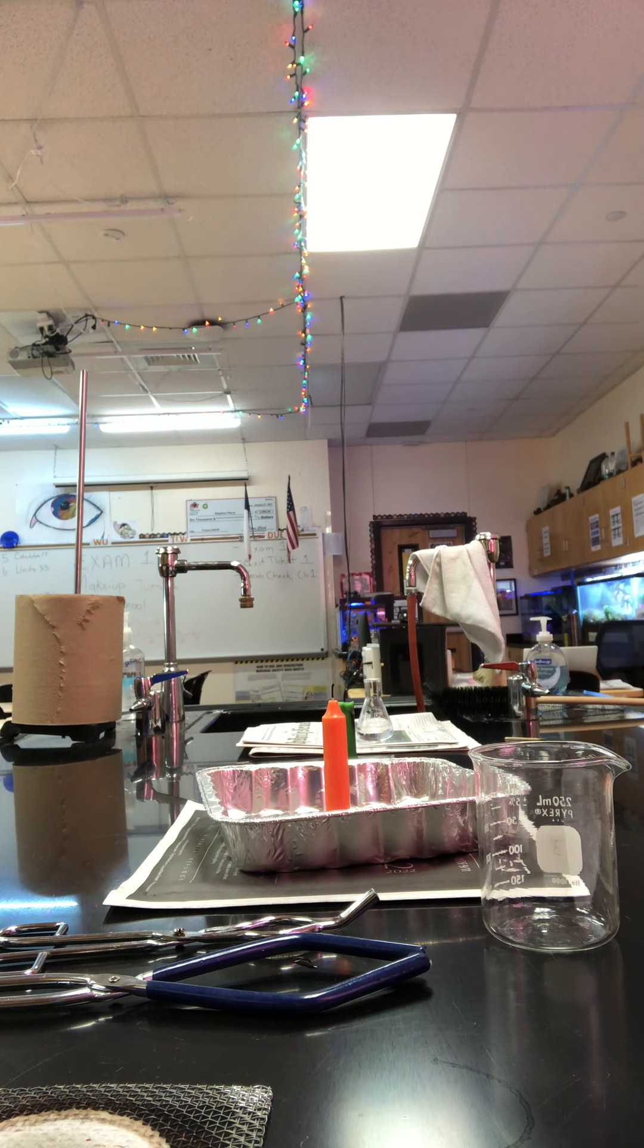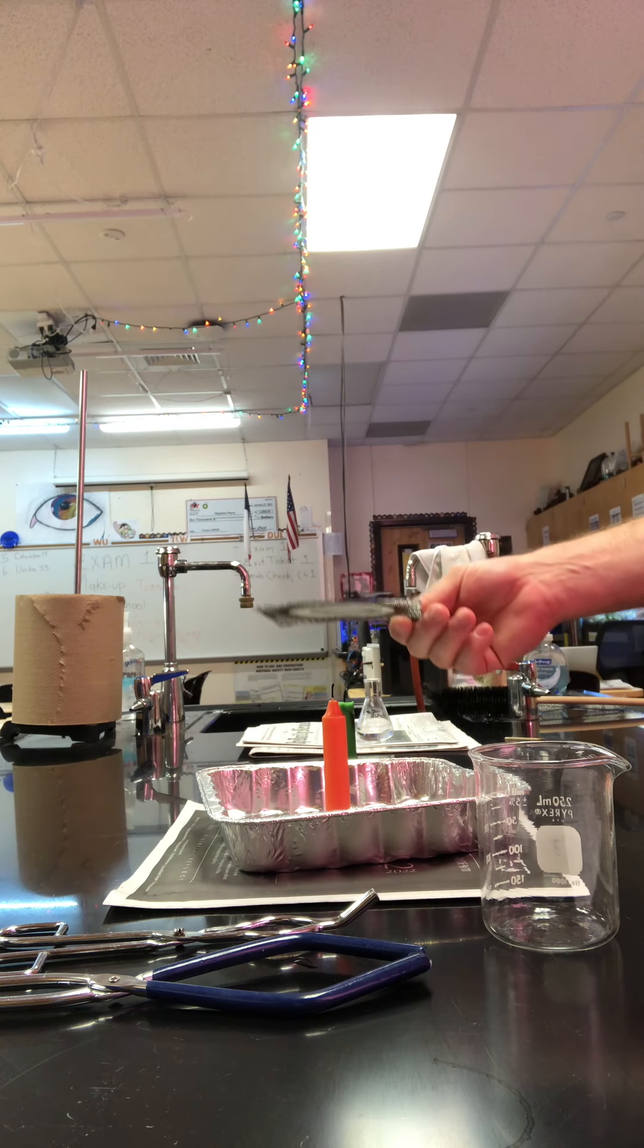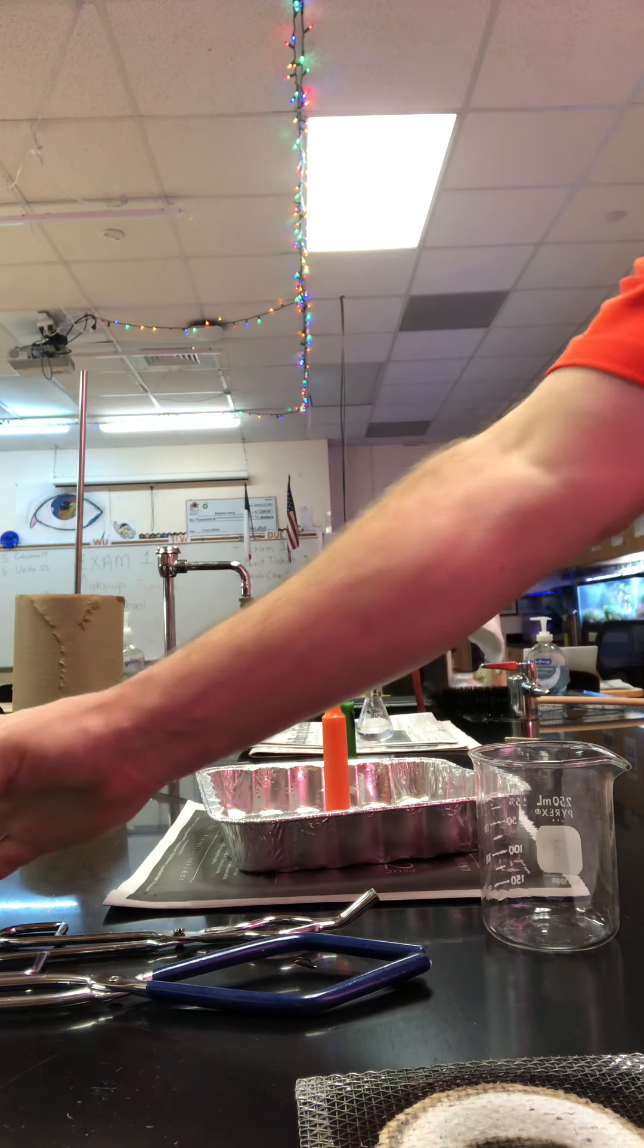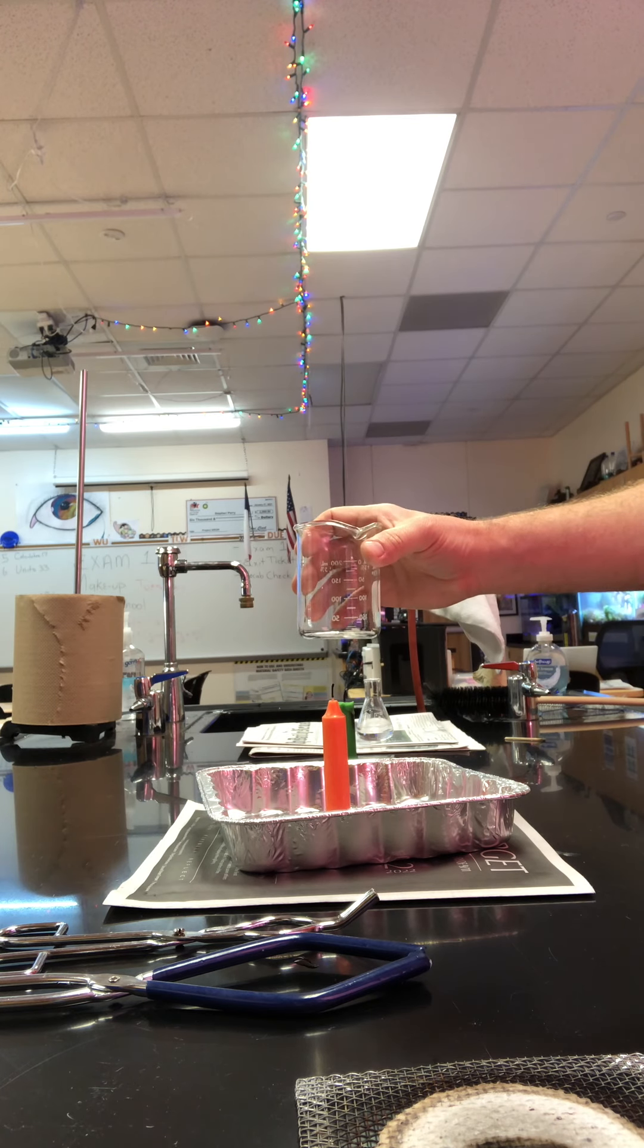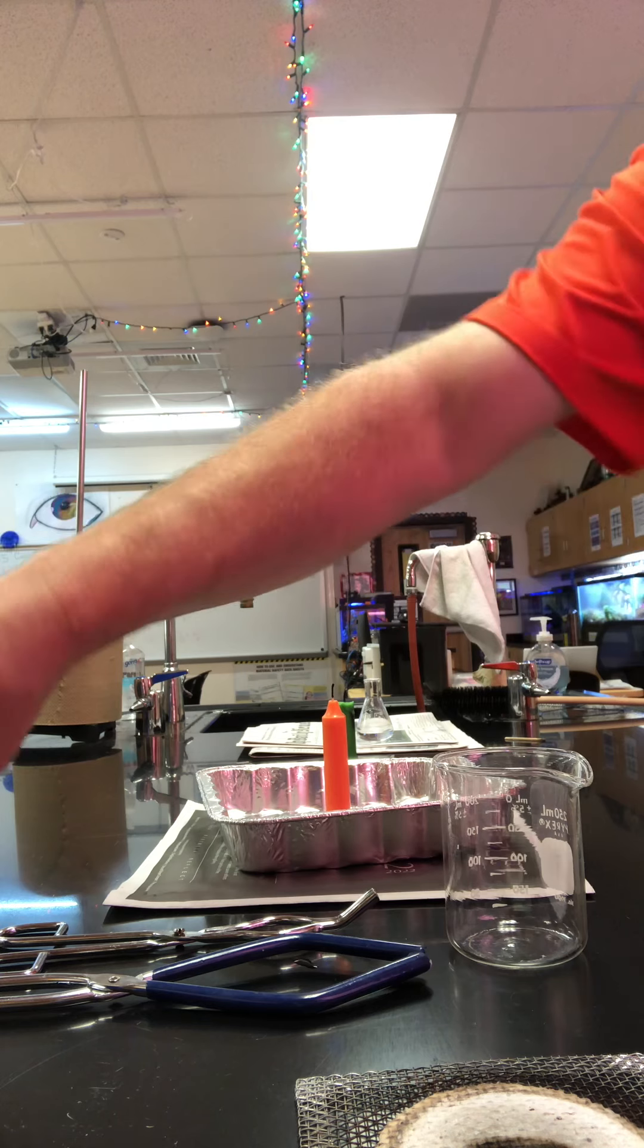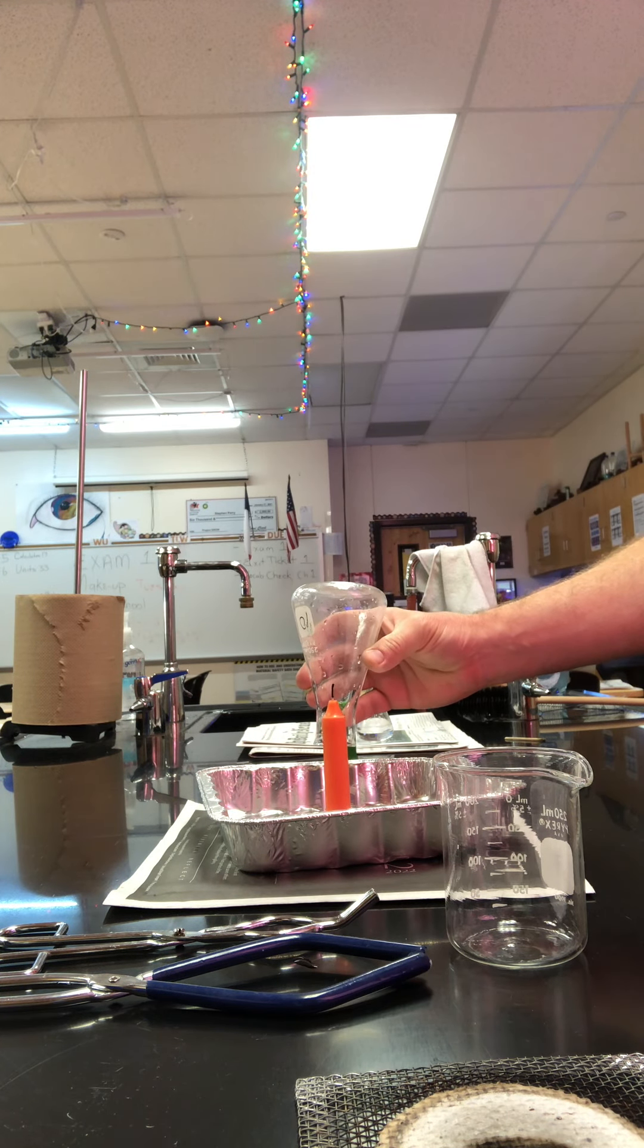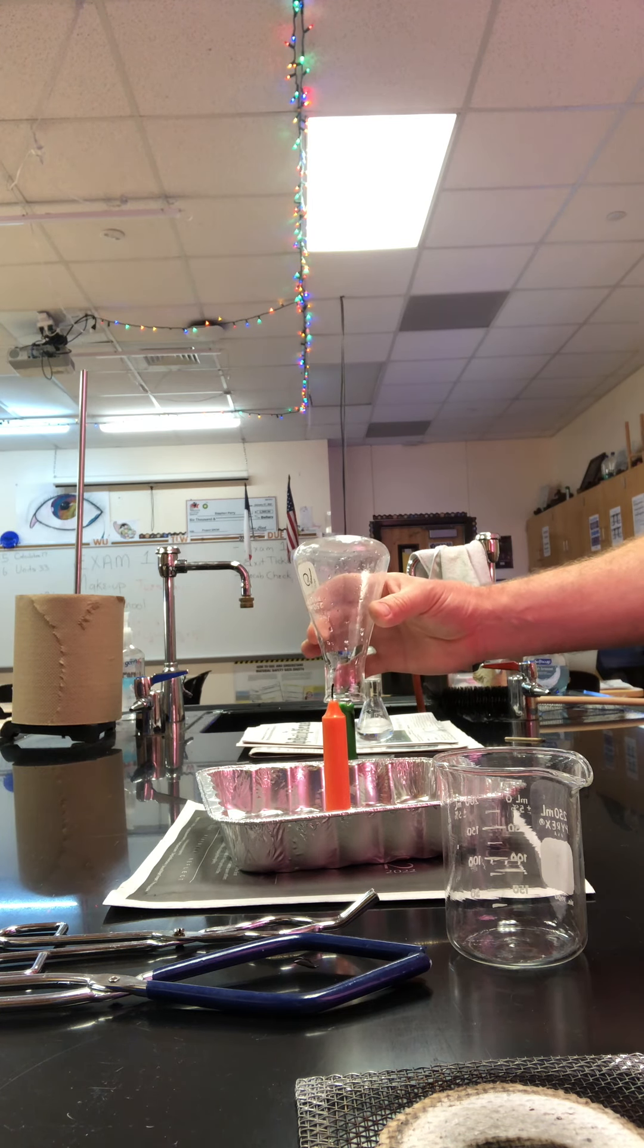So with the standing candle lit, we'll lower the wire gauze holding it with the tongs. You'll make some observations about what the flame does. Then we're gonna add water to the beaker, hold the beaker over the candle, make some observations about that. Then we'll add water to the pan, turn our Erlenmeyer flask over, put it over the candle, and watch what happens.